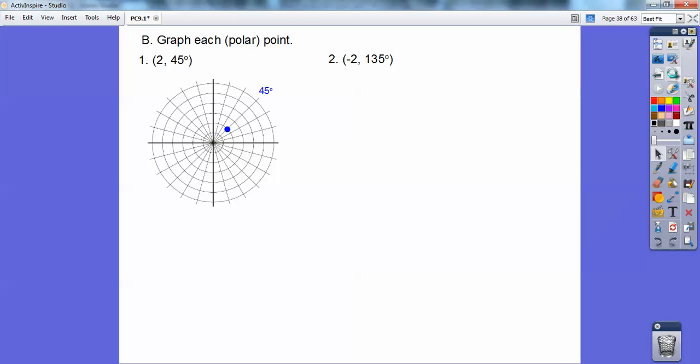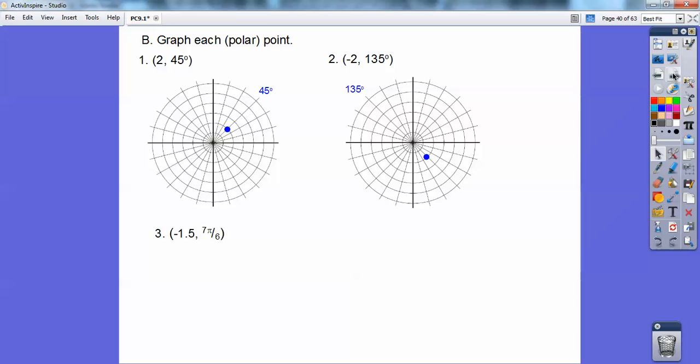Negative 2. So go out to the 135 and go in the opposite direction. So negative 2. Negative 1.5. So the angle that's 7 pi over 6 is in quadrant 3. There's 7 pi over 6, so go negative 1.5 in the opposite direction.